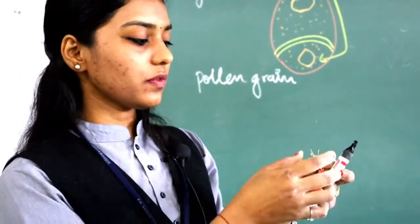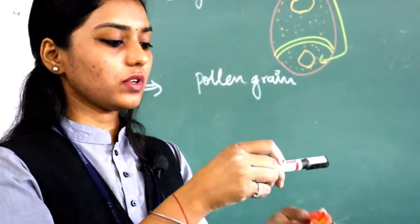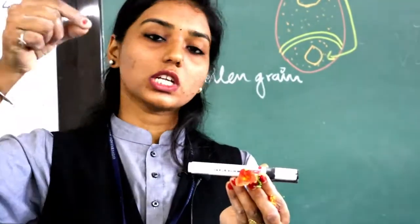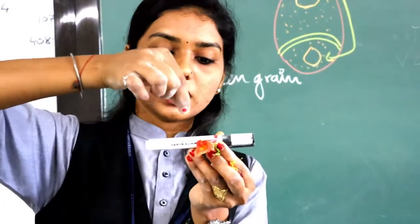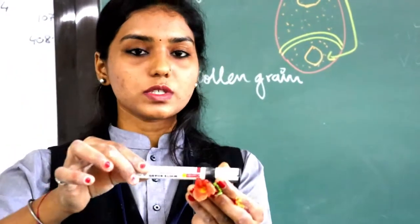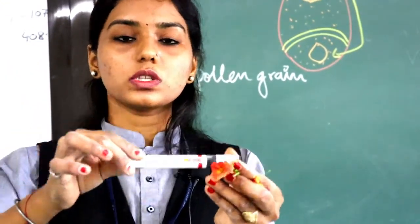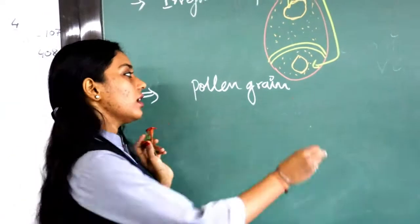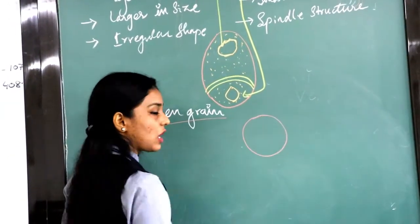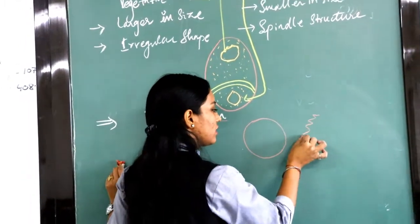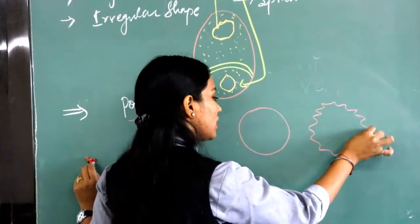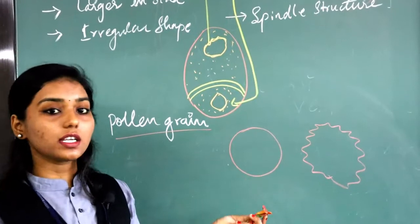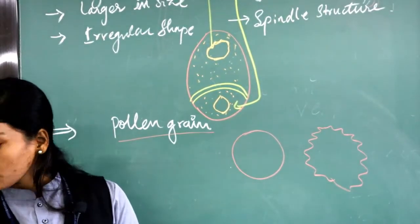That yellow color powder — if you take it on a slide, and observe under a microscope with a drop of water, then you will see the amazing structure of pollen grains, which are somewhat round in shape. You can clearly see this under the microscope.